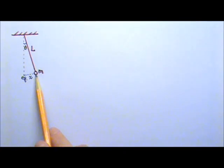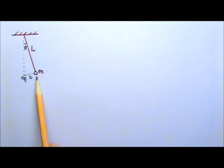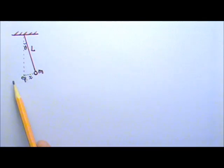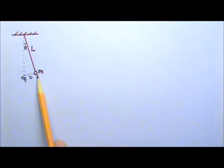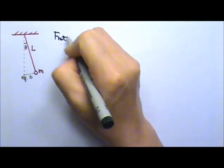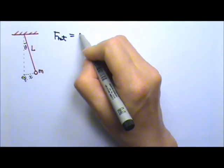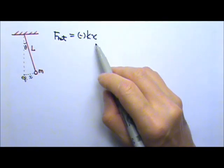Now let's analyze the motion of a pendulum. Here we have a pendulum with length L and mass M at the end of the string. This is the equilibrium position, and this is the position of the pendulum at one moment during the swing. Its angle to the vertical is theta and its position, or the distance to the equilibrium, is x. To show that a pendulum is a simple harmonic oscillator, I have to show that the net force matches the format: net force equals negative kx, just like a spring-mass oscillator.